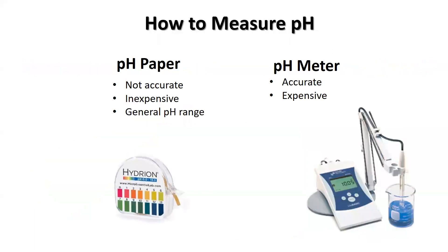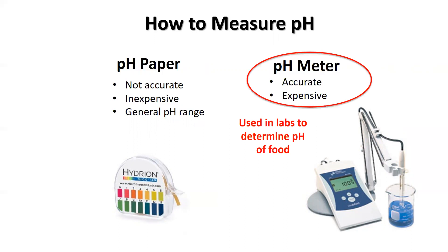There are several methods for measuring pH. The colorimetric method — pH paper or the pool testing kits that we have at home — give a general pH range. They are not accurate and we do not recommend using them to do any type of recipe testing. A pH meter is much more accurate and is able to give actual pH values. The pH meter must be calibrated before use and be maintained in a way to ensure proper function. These are what are used in the industry to determine the pH of food.